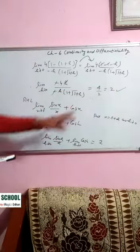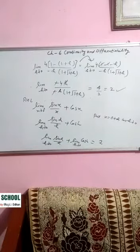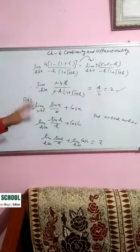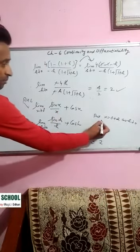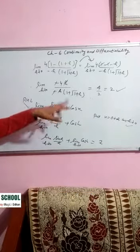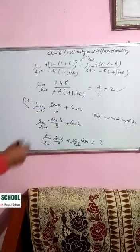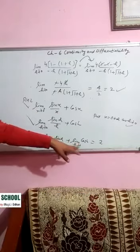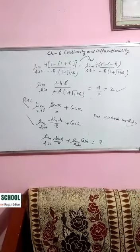Ab right hand limit. Right hand limit: limit x tends to 0 of sin(x) divided by x plus cos(x). Yahan x equal to 0 plus h put karte hain as h tends to 0. x ki value 0 plus h fill karo: sin(h) divided by h plus cos(h). Limit h tends to 0 lagate hain: sin(h)/h kitna ho gaya? 1. Aur cos(0) ki value kya ho gayi? 1. Toh 1 plus 1 = 2. Right hand limit bhi 2 aayegi.